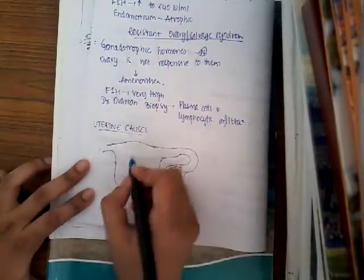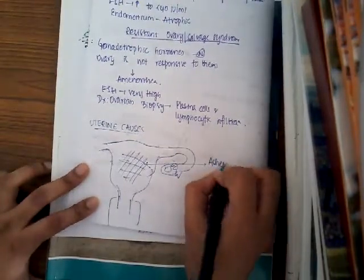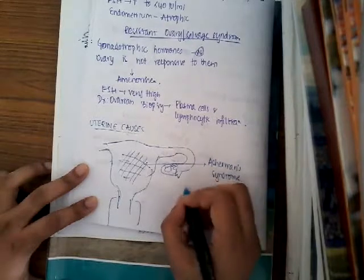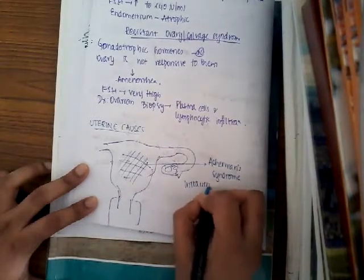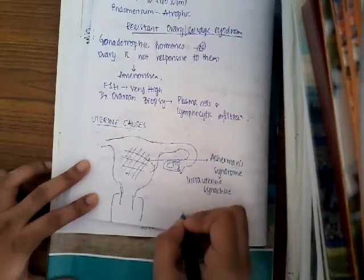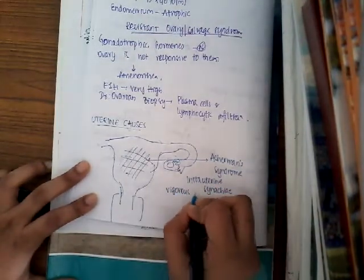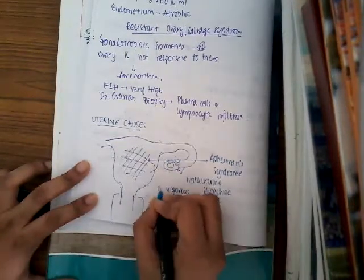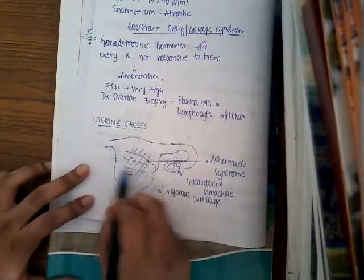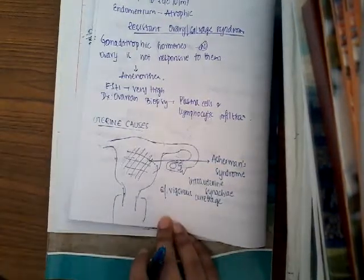What are the uterine causes of secondary amenorrhea? Whenever there is Asherman's syndrome, that can cause secondary amenorrhea. Asherman's syndrome is the formation of intrauterine synechiae — adhesions in the uterus. Vigorous curettage can cause raw ends on either side of the uterus, and when those raw ends come together, they lead to the formation of adhesions.